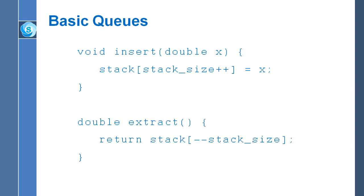Suppose you did ten inserts — stack_size goes up and you put data in stack[0] through stack[9]. If you now use extract, the first piece of data returned will be what's in stack[9], then stack[8], then stack[7], all the way down to stack[0]. This behaves exactly as we want a stack to behave — it extracts data in the opposite order from which it was inserted.